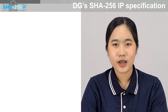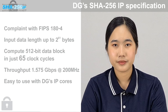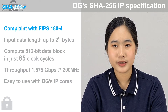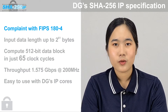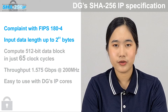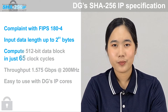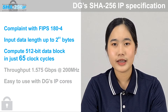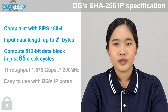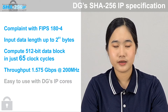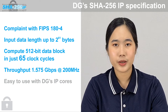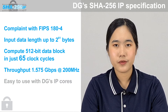Now, let's see our SHA-256 IP core specification. It implements the Secure Hash Standard FIPS 180-4 with a maximum input message length up to 2 to the power of 61 bytes. It can compute a 512-bit data block in just 65 clock cycles. The performance of SHA-256 is 7.875 Mbps throughput per 1 MHz, or 1.575 Gbps at 200 MHz.